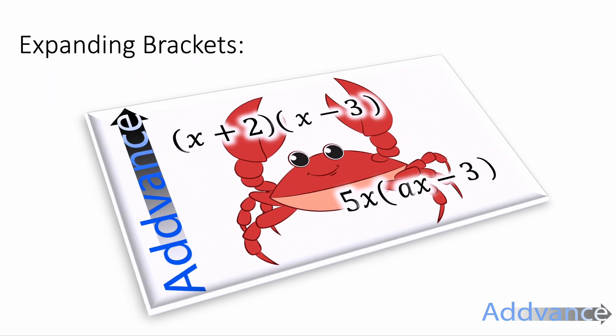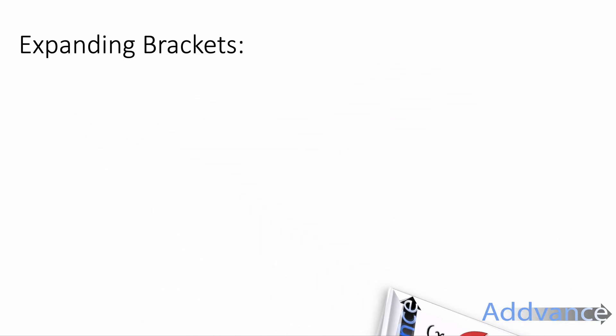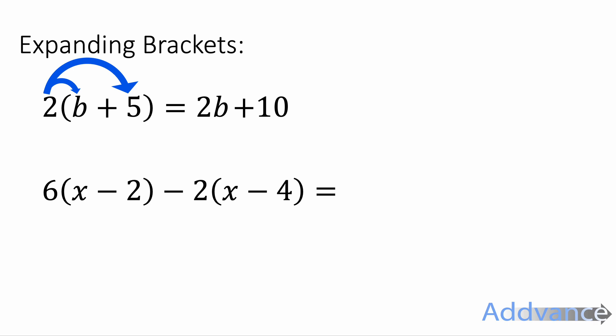Now I am going to touch on expanding brackets. But if you wanted to see this in more detail, I do have an entire video on expanding brackets, and I'll link that video in the description below. So 2 times b plus 5. To expand the brackets, we can do the 2 times the b, and we also do 2 times 5. 2 times b is 2b, 2 times 5 is 10. So the 2 multiplies everything inside the brackets, and we get 2b plus 10.